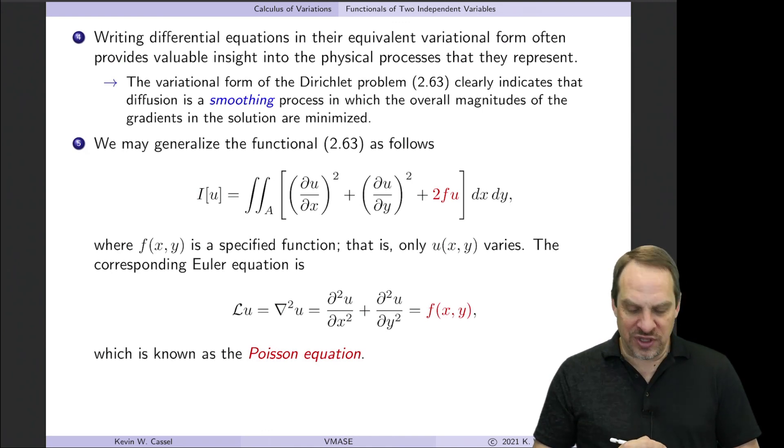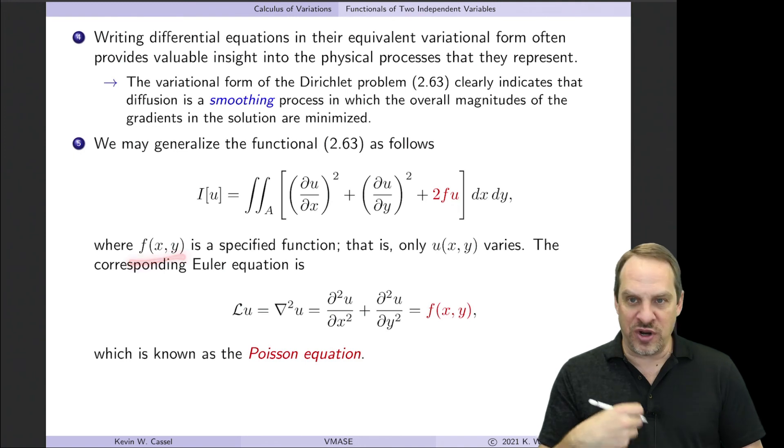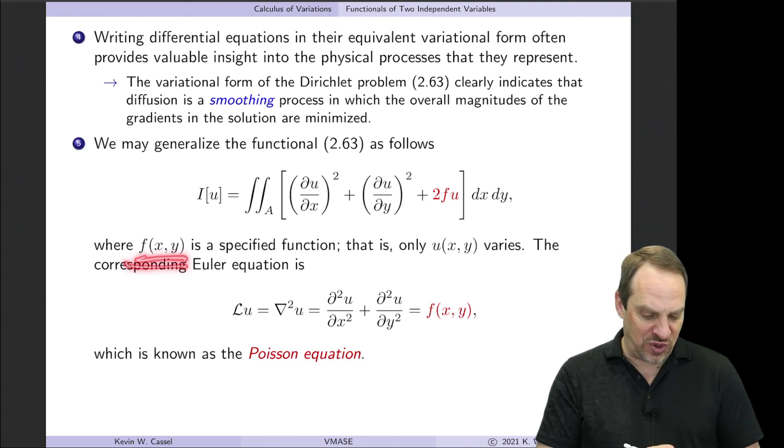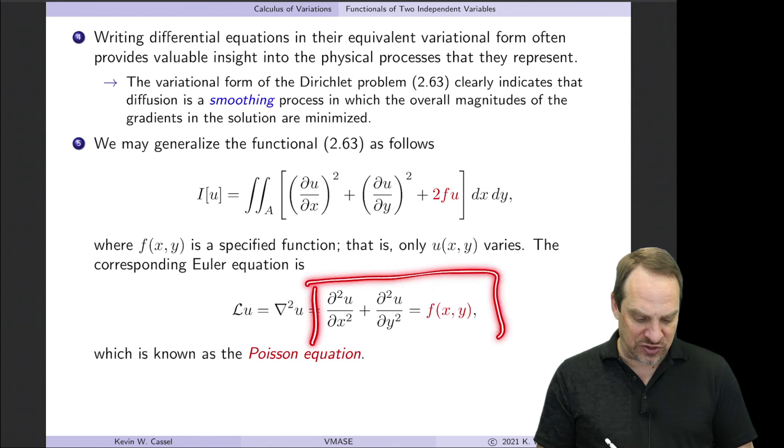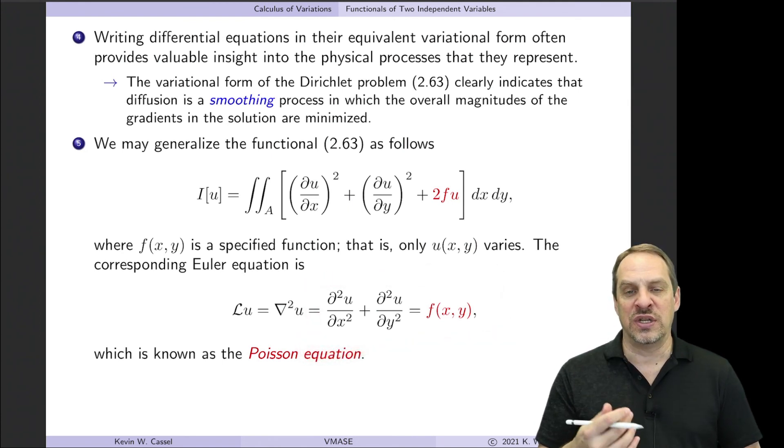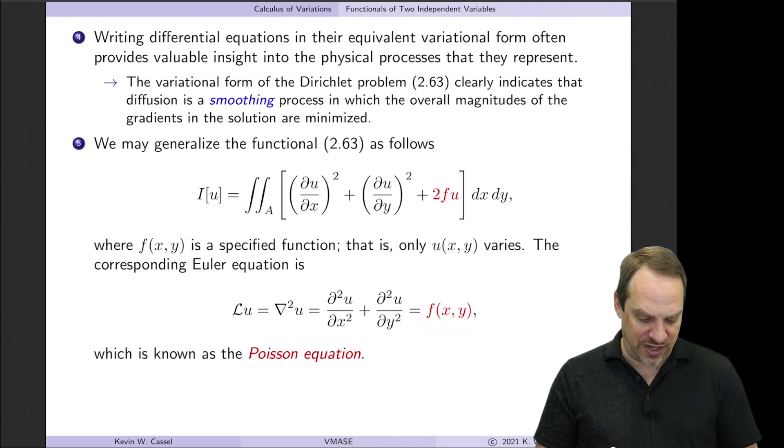Now if you generalize this a bit, you can get the Poisson equation. So if you add a term in the functional 2 times f times u, where f is some known function of x and y, then when you get the Euler equation, it actually results in what's known as the Poisson equation. The Poisson equation is just a non-homogeneous form of the Laplace equation, as you see here with the f on the right-hand side.